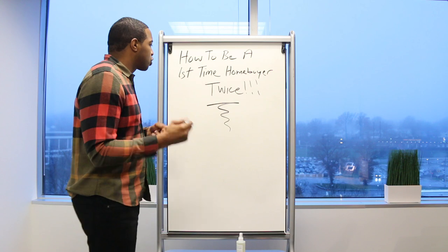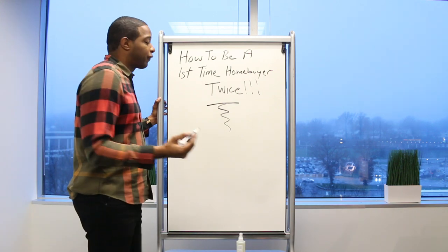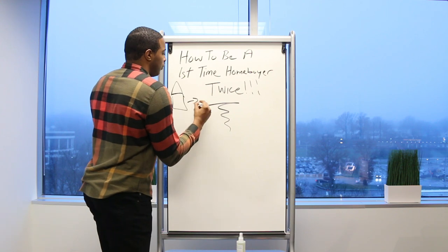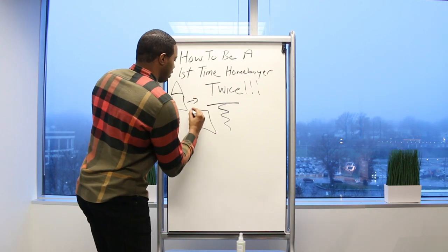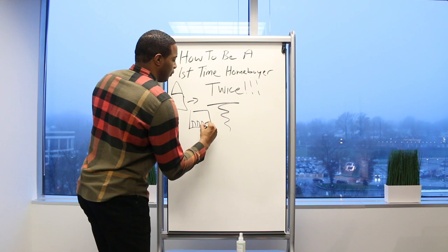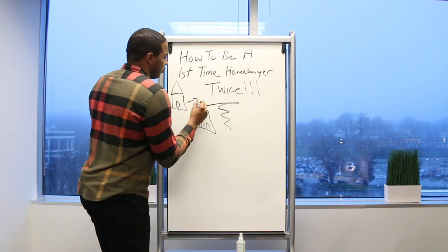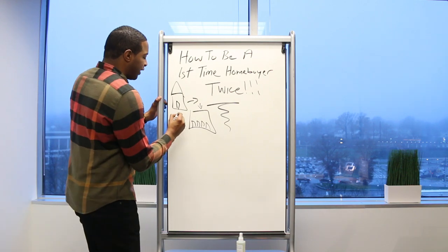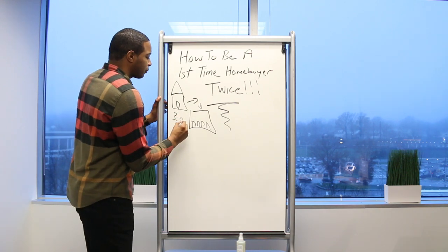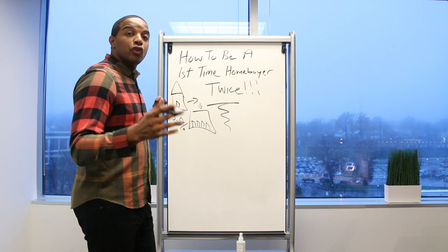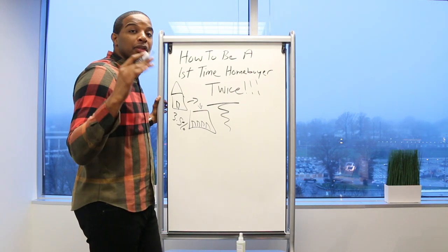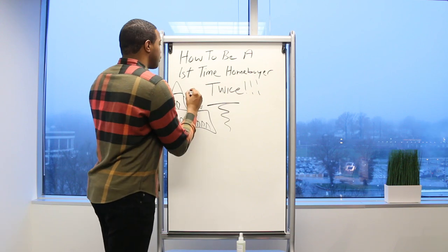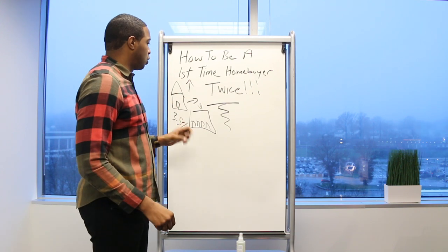When you purchase a property and you go in for the first time, you buy a one to four unit property with three and a half percent down. Most of you are under the impression and believe, or many of you, that this is for first-time homebuyers.